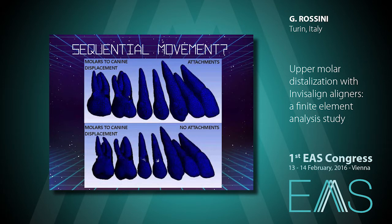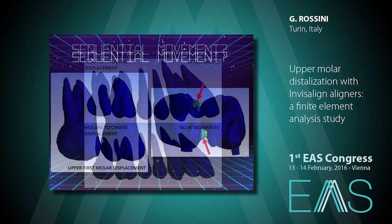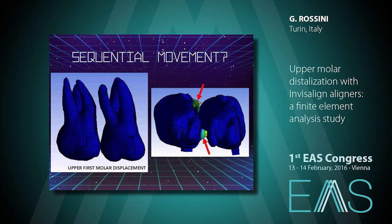Starting with sequential movement, here we can see a displacement of upper molars and canines together. The displacement prescribed was 0.25 millimeters as prescribed by the Invisalign technique. We can see that the anchorage loss falls on upper central and lateral incisors, both with and without attachments. When trying to move the upper first molar with the upper second molar still in contact — without first moving the upper second molar — this tooth experiences uncontrolled tipping, and the aligner bends in the center with a loss of contact on the crown.